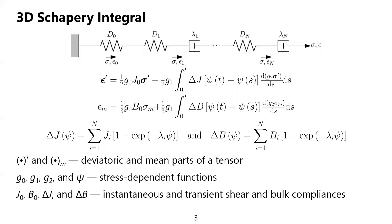A 3D stress integral in the middle relates the deviatoric and mean stresses to the deviatoric and mean strains, respectively, where J_O, G_1, G_2, and Psi are stress-dependent functions, and J_O, B_O, D_J, and D_B are the instantaneous and transient shear and bulk compliances, respectively.